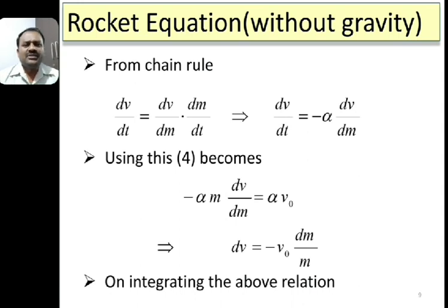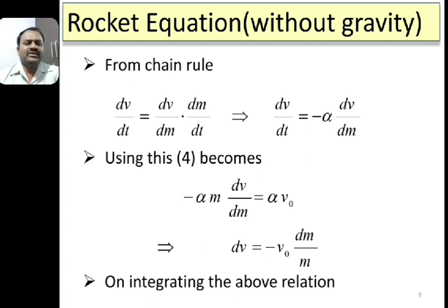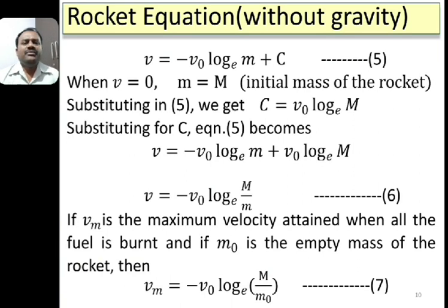Using the chain rule, dv/dt = (dv/dm) × (dm/dt) = (dv/dm) × (−alpha). Substituting into equation 4: −alpha × m × dv/dm = alpha × v0. Alpha cancels, and cross-multiplying gives dv = −v0 × dm/m. Integrating this equation, we get v = −v0 × ln(m) + constant C. This is equation 5.